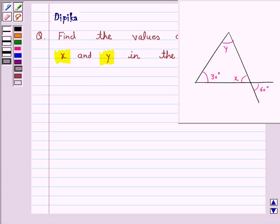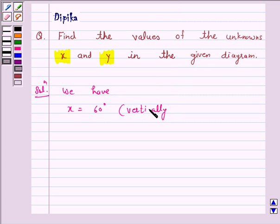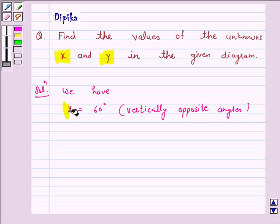Now we know that when two lines intersect, vertically opposite angles are formed and they are equal. So we have x is equal to 60 degrees, vertically opposite angles. So we have found one unknown.